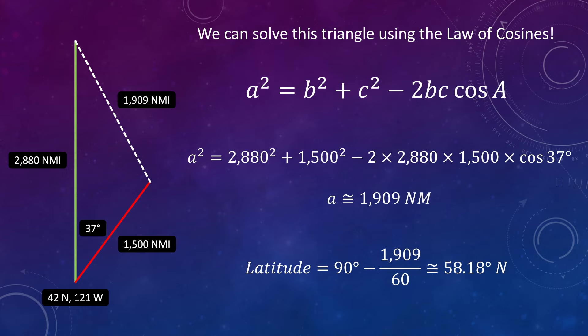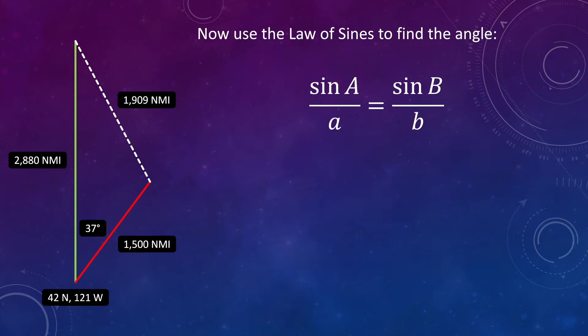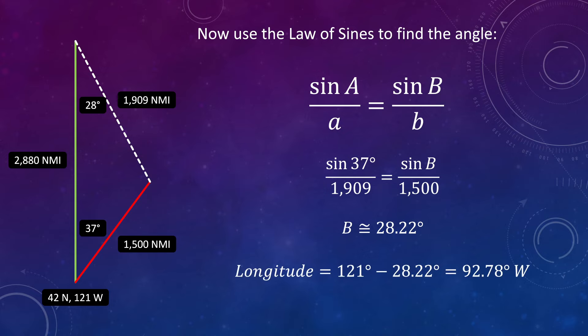And if we use the rule of 60 nautical miles per degree, we can work out the latitude of our mystery point to be 58.18 degrees north. But what about its longitude? So now we use the law of sines to work out that angle between the green line and the third side. And that works out to be 28.22 degrees, which is the change in longitude from the GP. So subtract that from the longitude of the GP, and we get 92.78 degrees for the longitude of our mystery point on the circle of equal altitude.